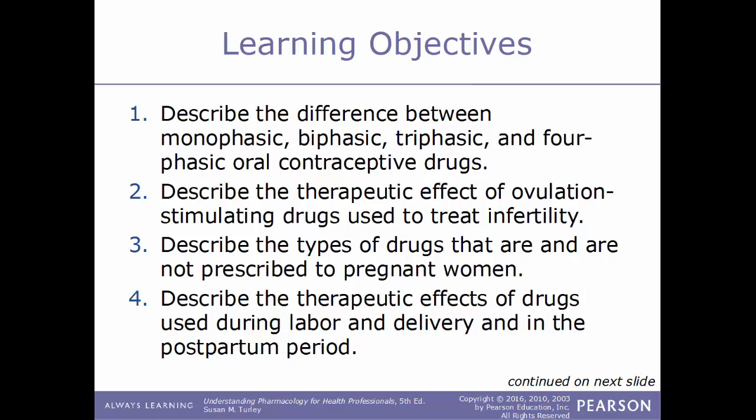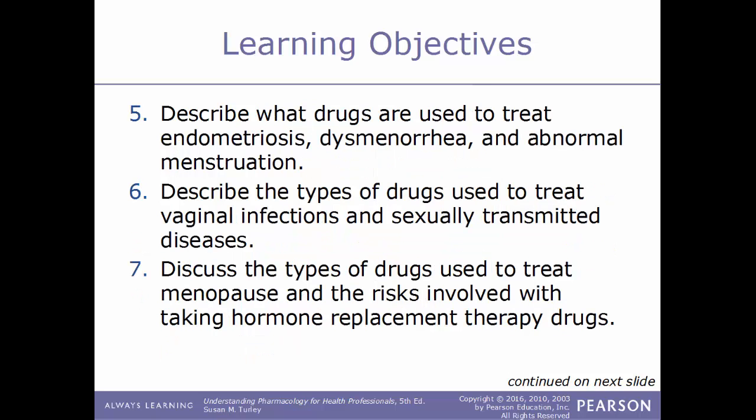Learning objectives for this chapter: describe the difference between monophasic, biphasic, triphasic, and four-phasic oral contraceptive drugs; describe the therapeutic effect of ovulation-stimulating drugs used to treat infertility; describe the types of drugs that are and are not prescribed to pregnant women; and describe the therapeutic effects of drugs used during labor and delivery and in the postpartum period.